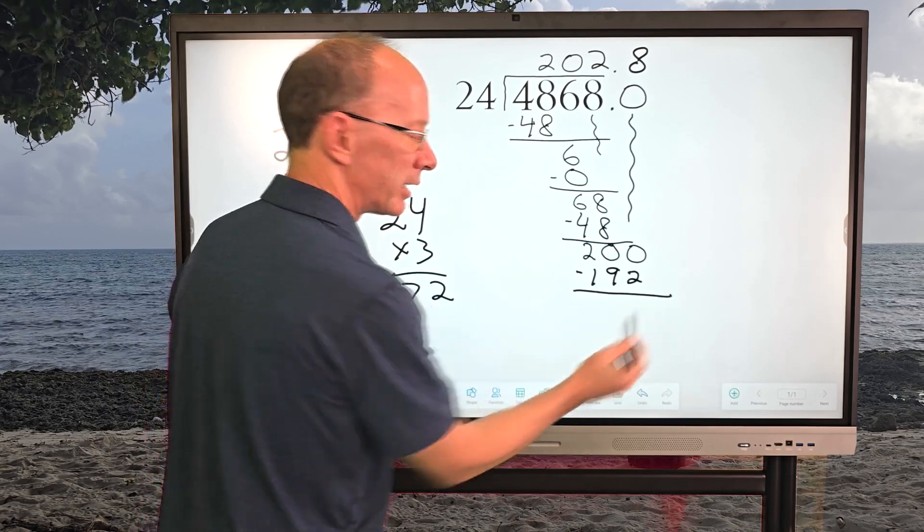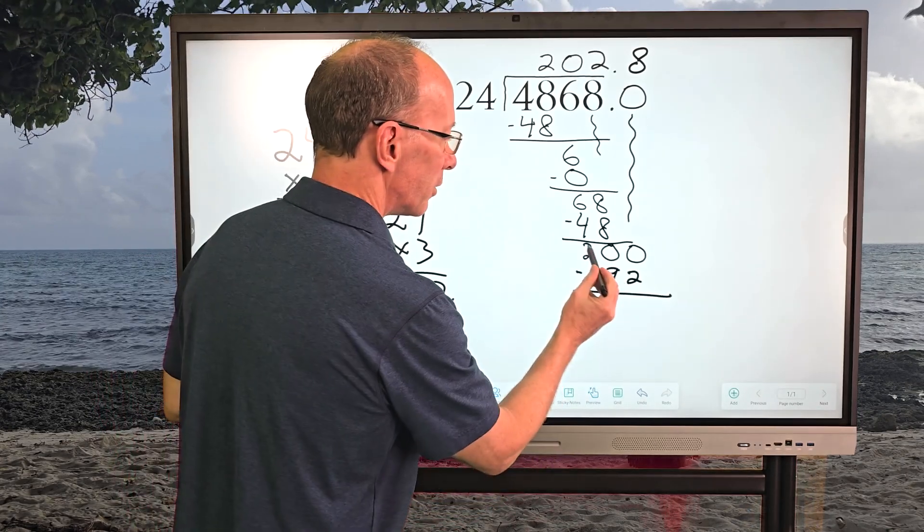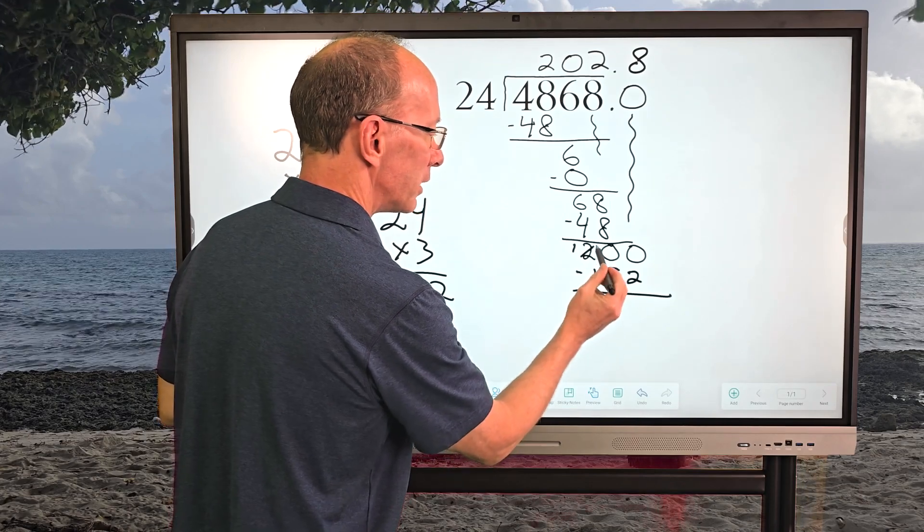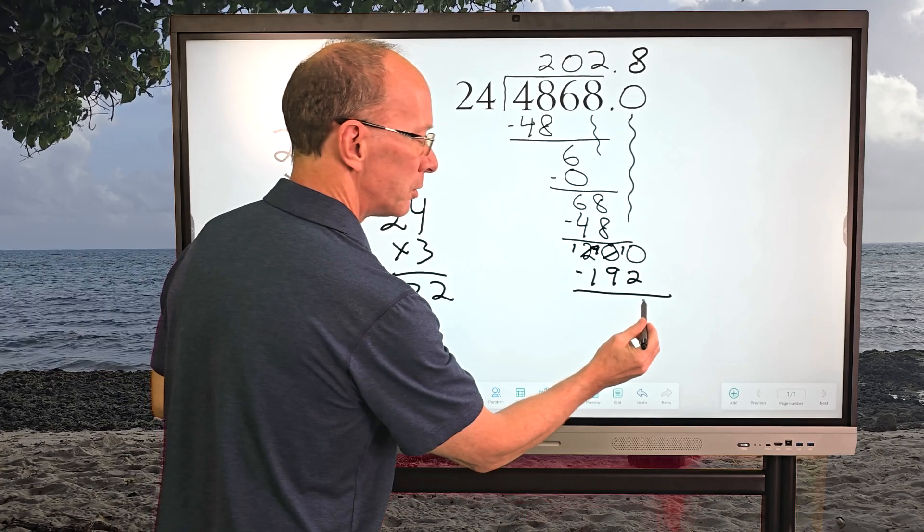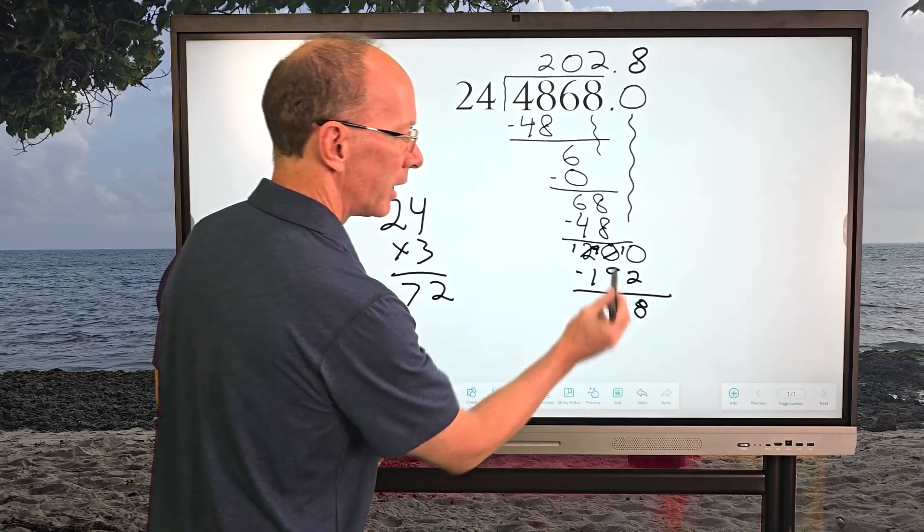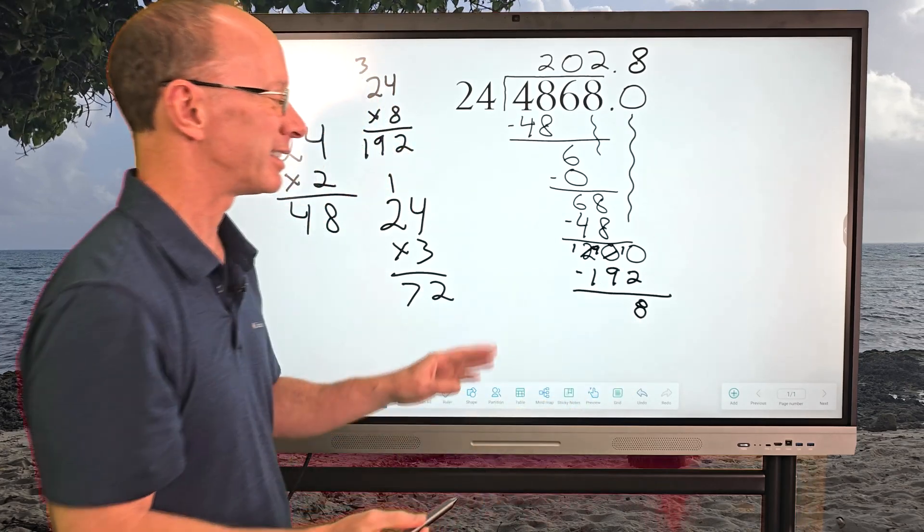And then 8 times 24, which would be 192. And then I go ahead and subtract. And now I got to borrow. So this would be 1, and this is 9. And then 10, 10 minus 2, which would be 8. And then 9 minus 9 is 0.